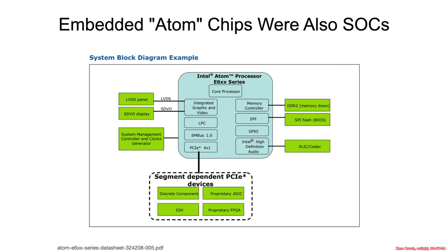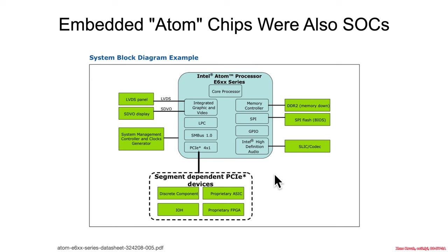Intel does actually make proper system on a chips — typically the Atom series processors, more used in embedded systems rather than laptops or servers. There you really do have everything — all the hardware units in a single chip, all connected through some internal bus. In this class, we mostly focus on desktop or server grade processors. Personally, I haven't encountered Atom processors that much; at some point they discontinued that name, although the technology is still being utilized in certain situations.